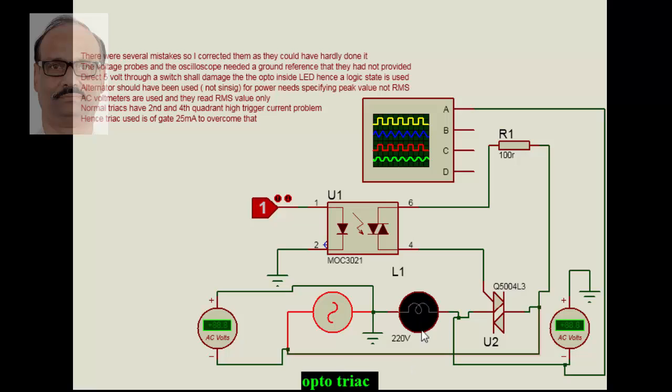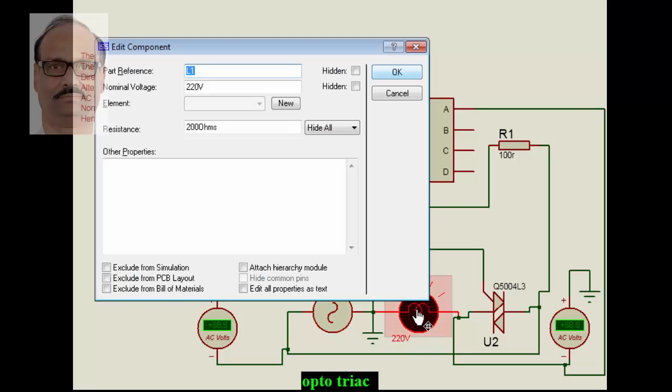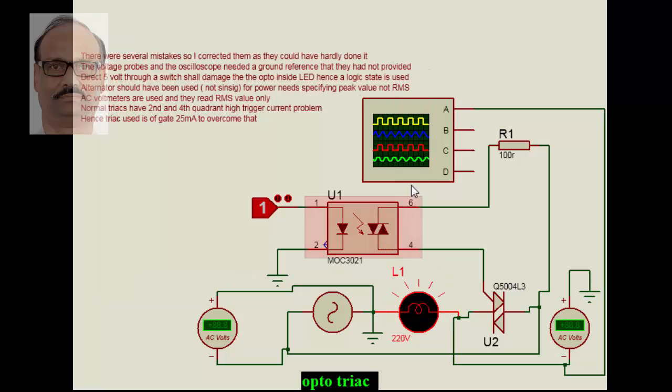The load also has to be selected accordingly. The load has to be selected for the RMS value, not for the peak value, and the value of the load has to be appropriately changed. Instead of some 20 ohms or 40 ohms, one has to make it a little higher ohms.